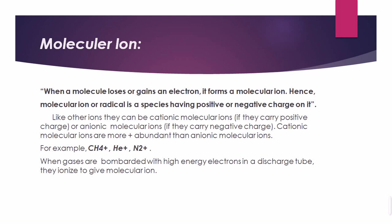When a gas is bombarded with high-energy electrons in a discharge tube, it ionizes to give molecular ions. Consider a glass tube where high-pressure gas is filled, and high-energy radiation such as X-rays or photons is applied. The gas ionizes into molecules with positive or negative charges depending on the charge carried. For cationic molecular ions, the gas in the tube carries a positive charge.